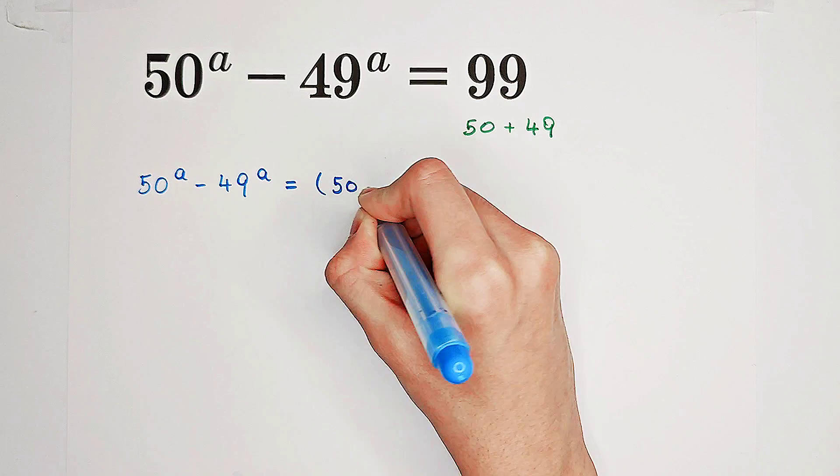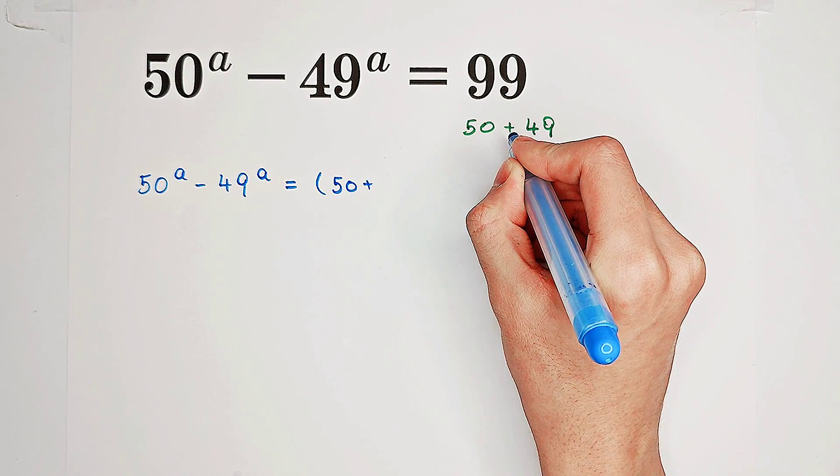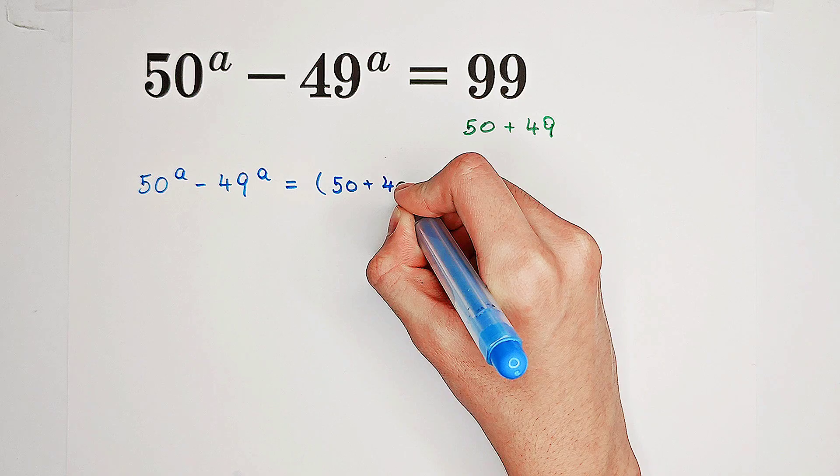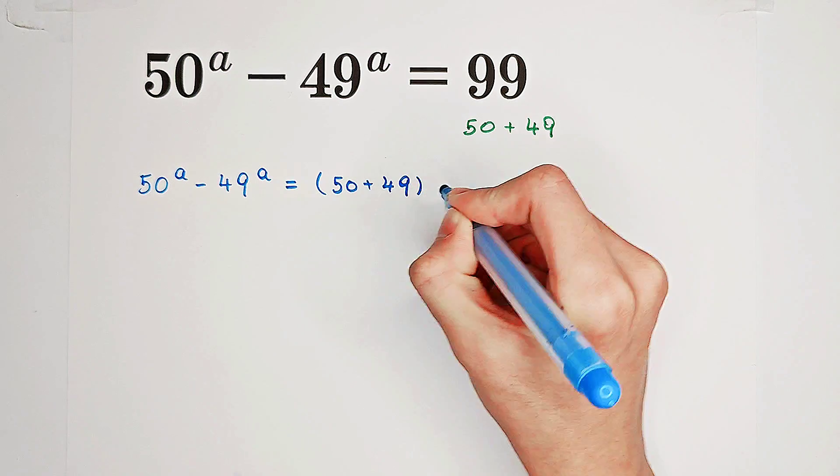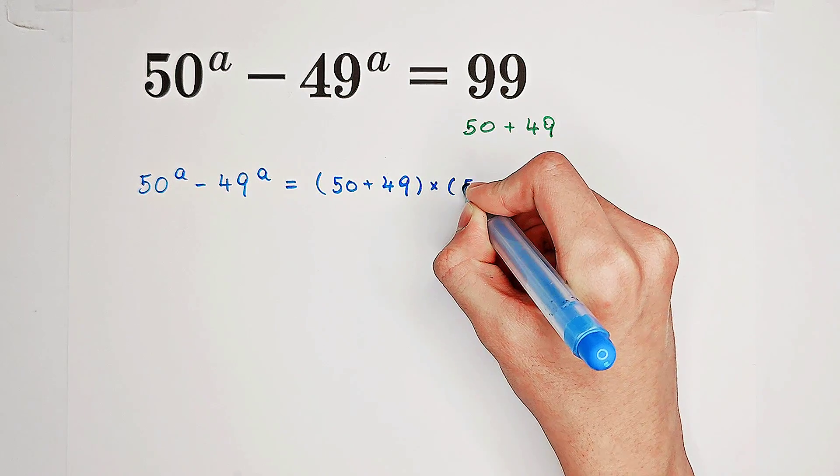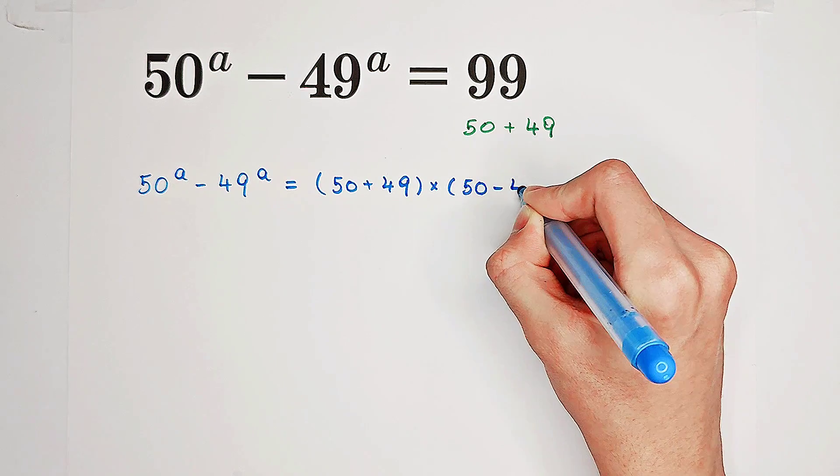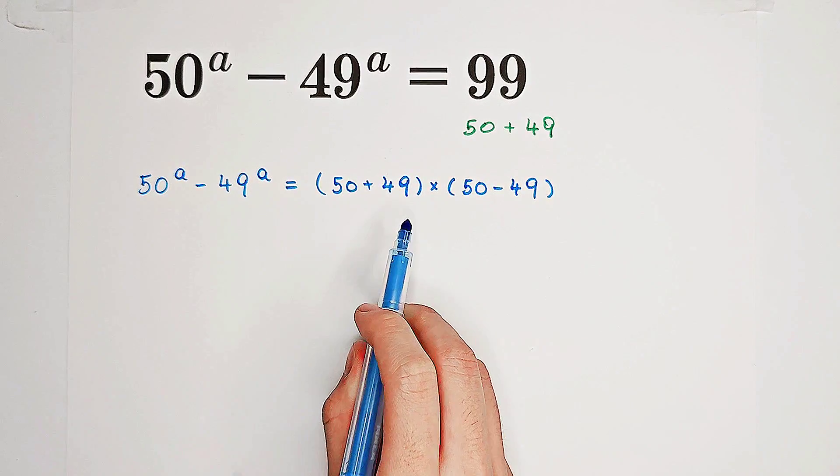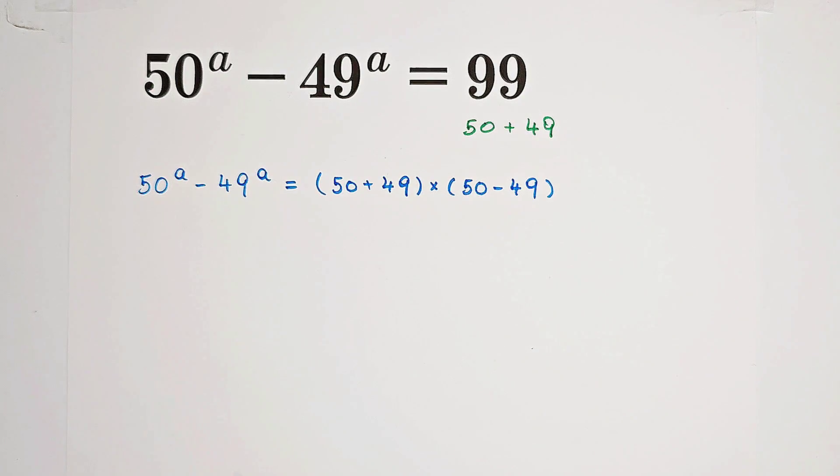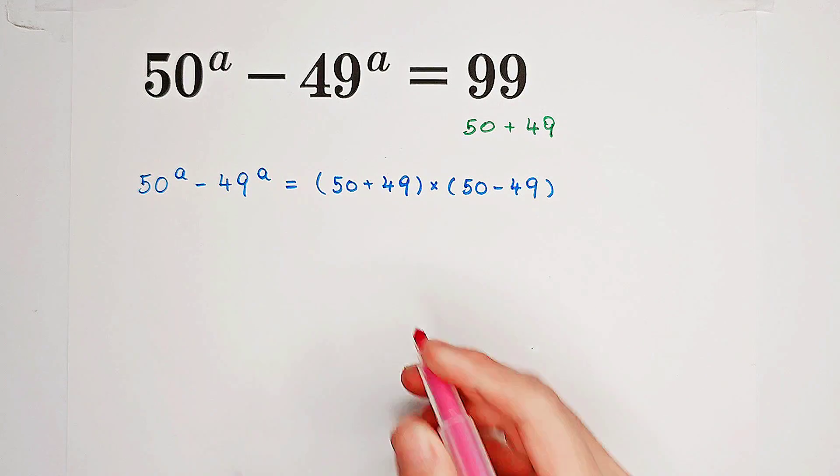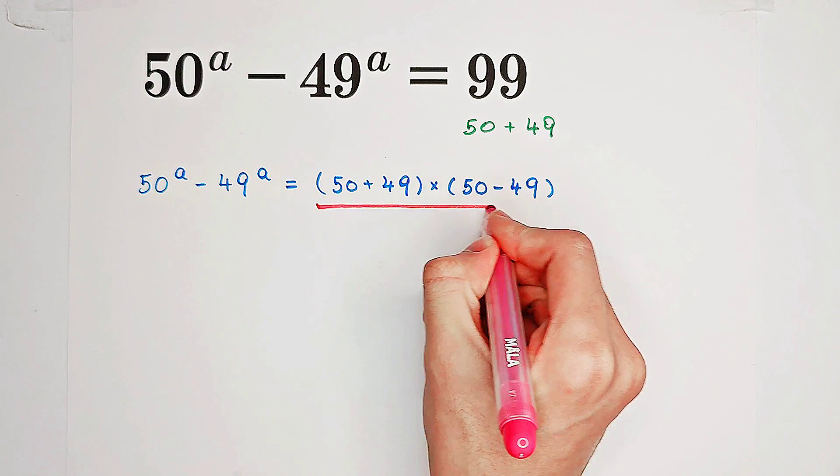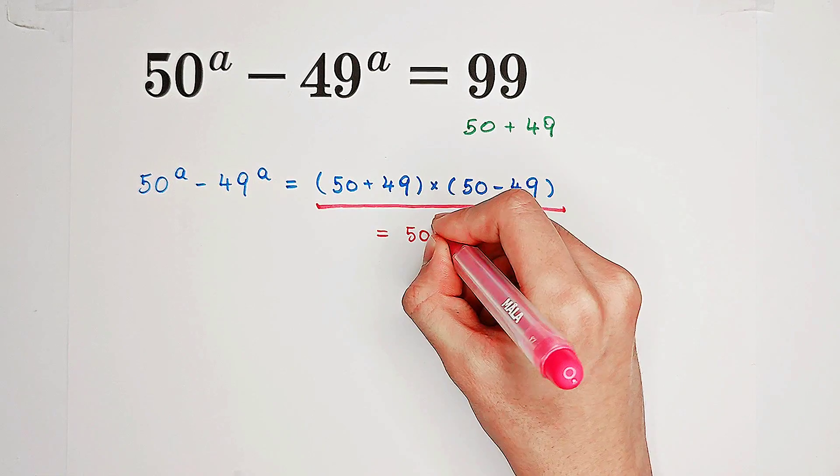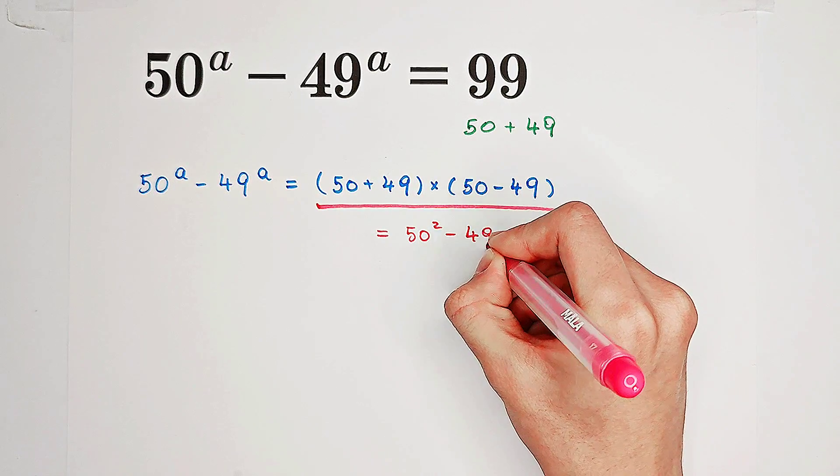Because 99 is 50 plus 49, and if I multiply this 50 plus 49 by 1, and 1 is just the difference of 50 and 49, so then we get 50 plus 49 times 50 minus 49. And now, you can see that this one is just 50 squared minus 49 squared.